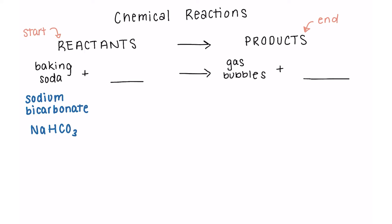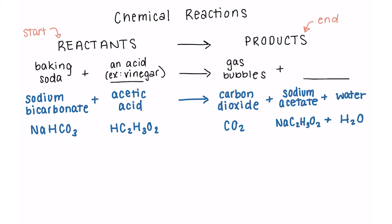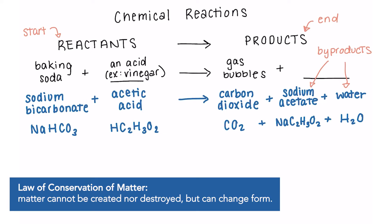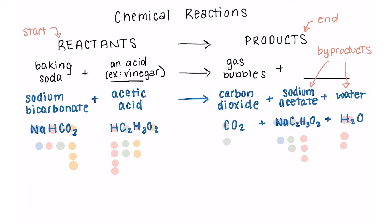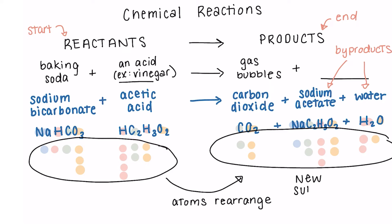In most recipes, baking soda chemically reacts with some sort of acid. The exact formula of this acid can vary, but we'll almost always see a hydrogen atom. For our chemical reaction, we're going to use a common acid found in vinegar — acetic acid — which is made up of hydrogen, carbon, and oxygen. Two other products are also formed: sodium acetate and water. This gets back to the law of conservation of matter, which says matter cannot be created or destroyed. The atoms in our starting substances rearrange to create new substances with new properties — they can be different states of matter, look different, and behave differently too.